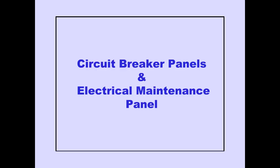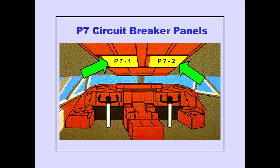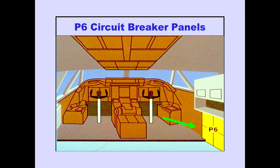Let's now discuss the circuit breaker panels and the electrical maintenance panel. There are two P7 circuit breaker panels, labeled P7-1 and P7-2, located aft of the overhead panel. All P7 circuit breakers should be in for normal flight operations. There are four P6 circuit breaker panels located on the aft right sidewall behind the first officer's seat. All P6 circuit breakers should be in for normal operations.